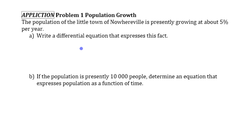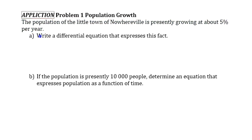Now we're going to apply our law of exponential change and how it relates to differential equations to this situation. We have a population of a little town growing at 5% per year. Writing a differential equation that expresses that fact, you have the rate of change — we'll use p for population. The rate of change of population, dp/dt, equals some constant times the population.